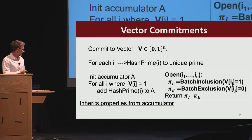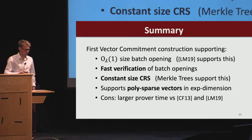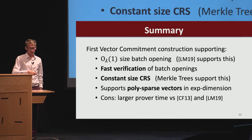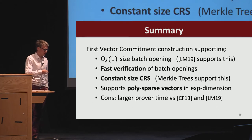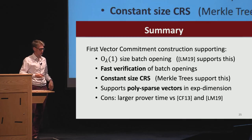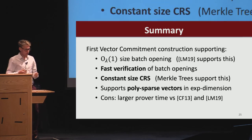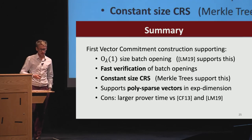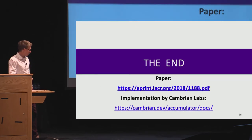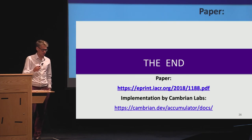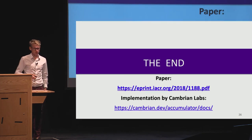This final vector commitment has very nice properties and is the first vector commitment which achieves all of these properties simultaneously: constant size openings, fast verification, a constant size CRS, and support for sparse vectors. The prover time is larger than the work Julia presented and significantly larger than a Merkle tree, so this is one downside. You can find the paper online, and there is an implementation by the folks from Cambrian Labs. Thank you.